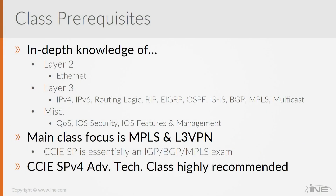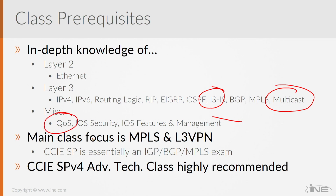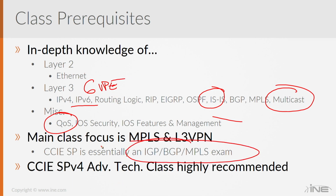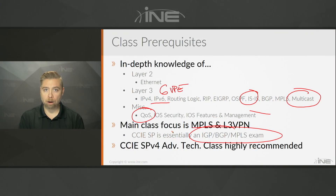As long as you guys have a good handle on routing, you should be in pretty good shape for this class. Typically, the weak points for people would be ISIS routing, multicast, QoS, possibly IPv6, and some IPv6 transition techniques like 6VPE, which can be kind of confusing. But the real main focus of the class and the exam is going to be routing — both IGP and BGP — and MPLS.